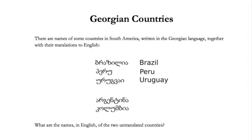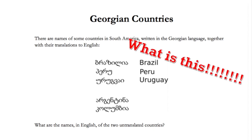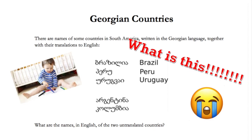Georgian countries: there are names of some countries in South America written in the Georgian language, together with their translations to English. At first it looks like some toddler scribbled on the page, but when you take a close look, everything you need to solve this problem is right there on the page.